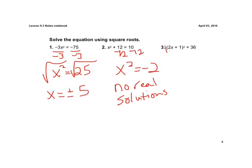And number 3, we have a quantity squared. So we're going to square root both sides. And when we do that, we're just left with 2x plus 1 over here equals positive and negative 6.